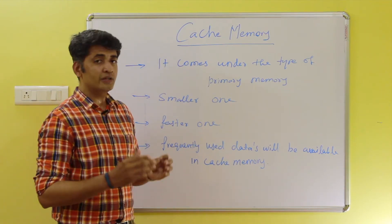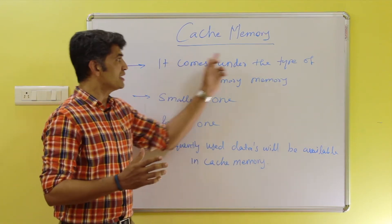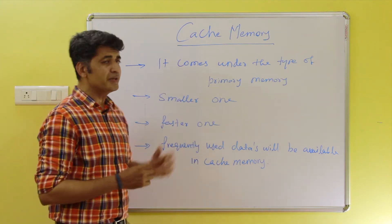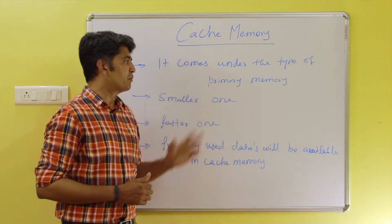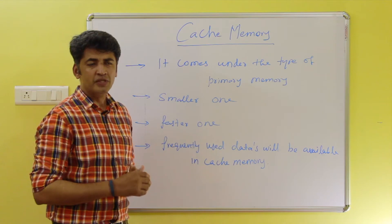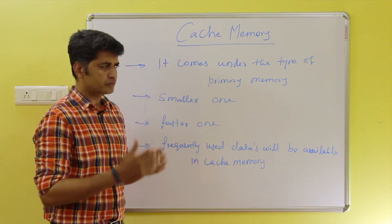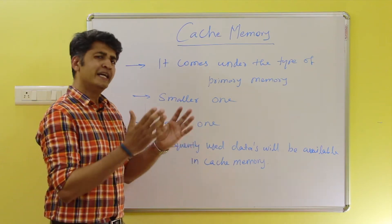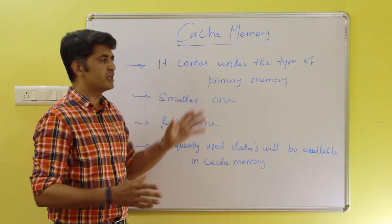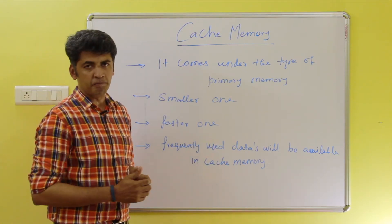That particular concept can be implemented through cache memory. Cache memory comes under the type of primary memory. It is a smaller one, and at the same time it is a faster one. This particular cache memory will be placed between the processor and the main memory.